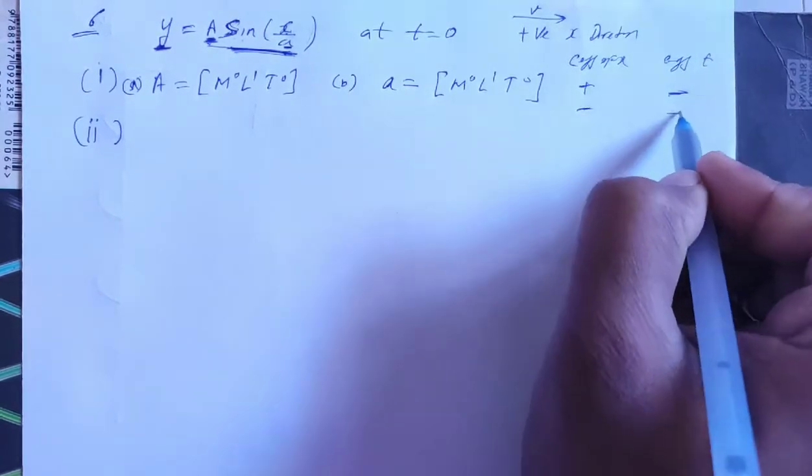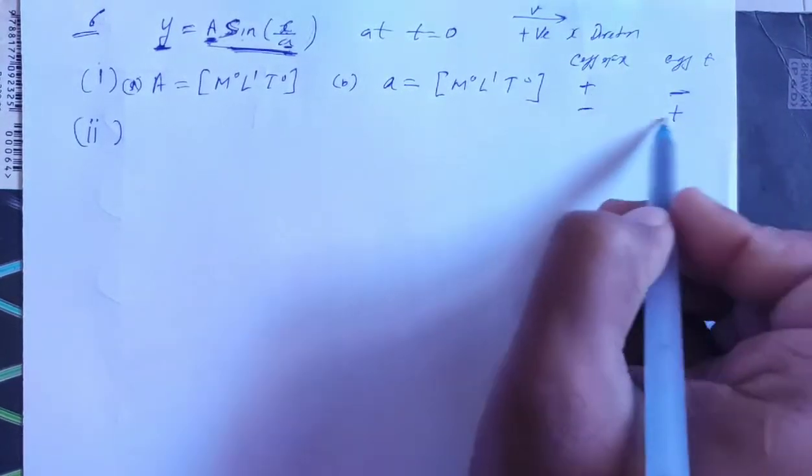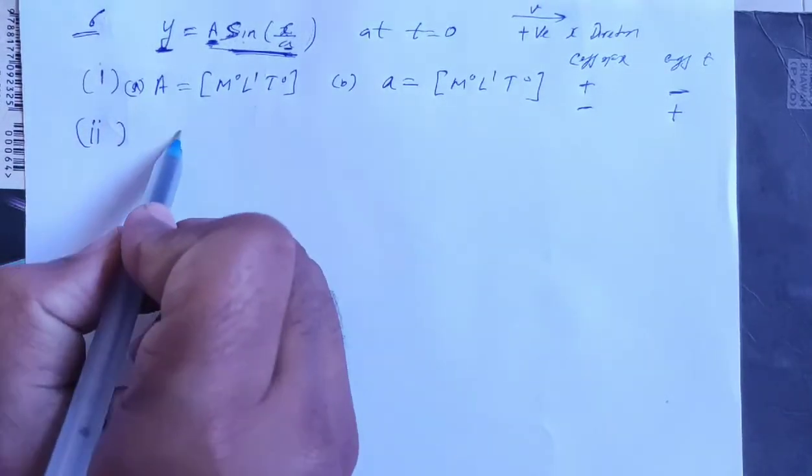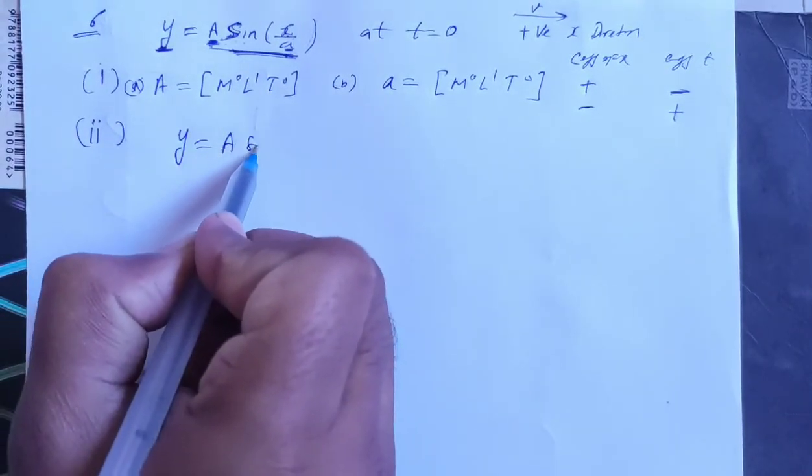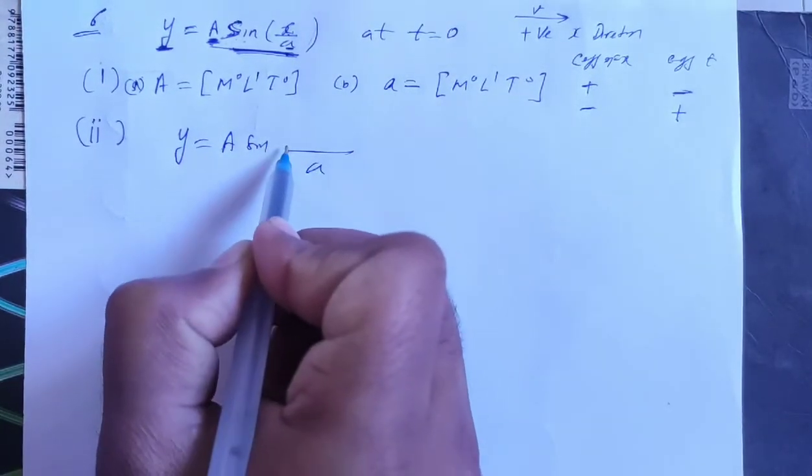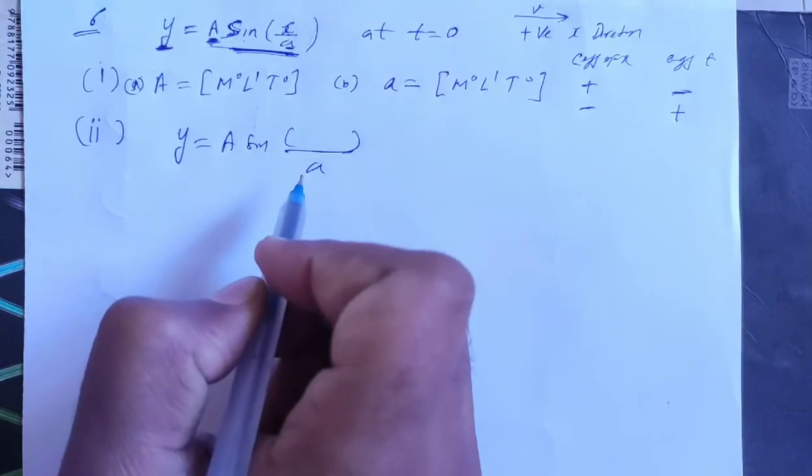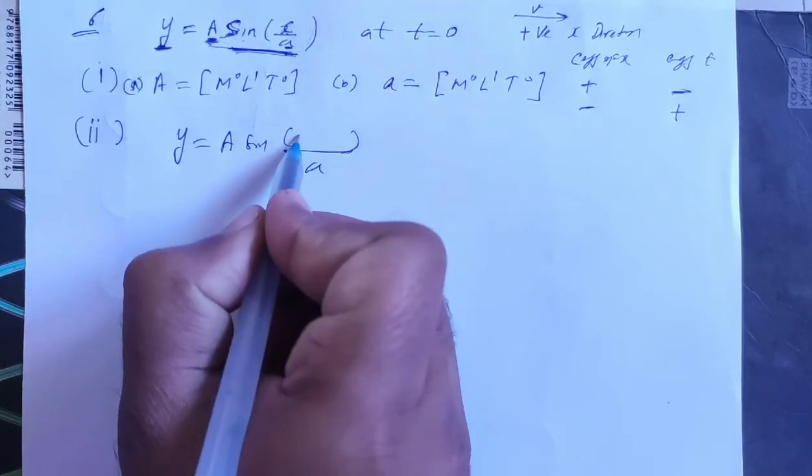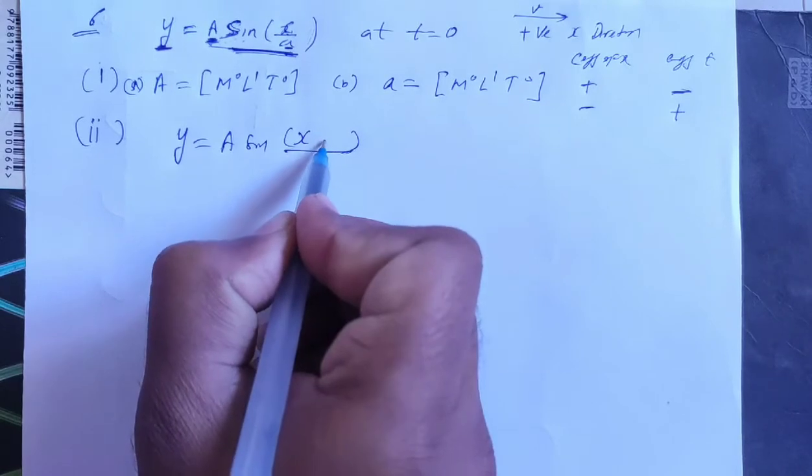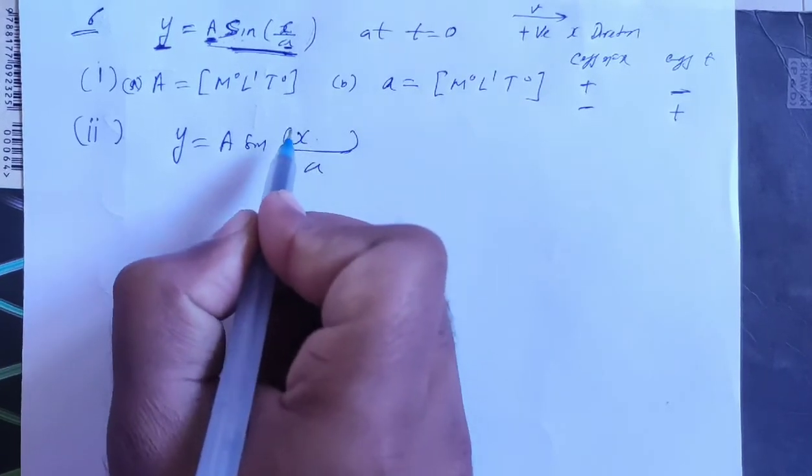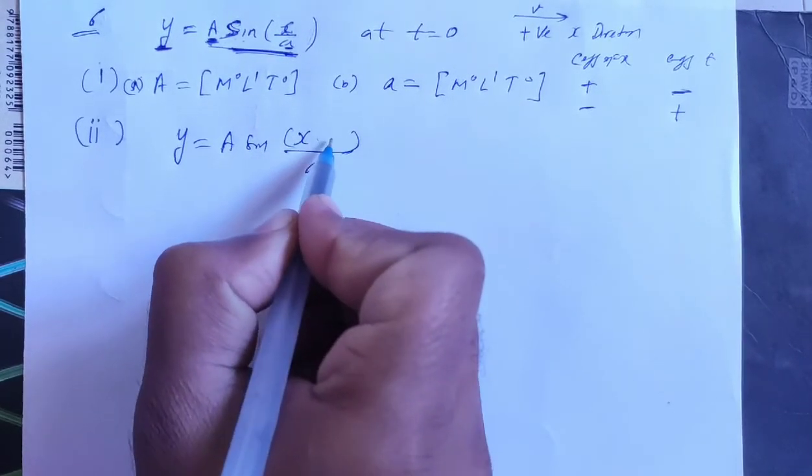If coefficient of x is plus, then coefficient of t should be minus. In place of x, I can write either minus or plus. See, x is plus here, so what should I keep for t? I'll write minus.